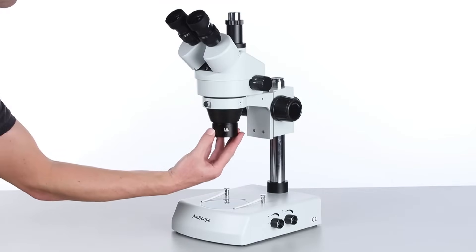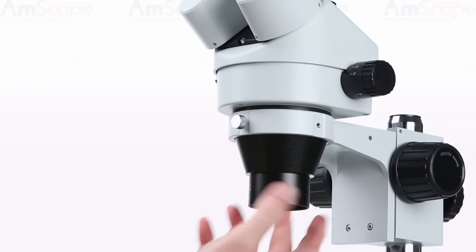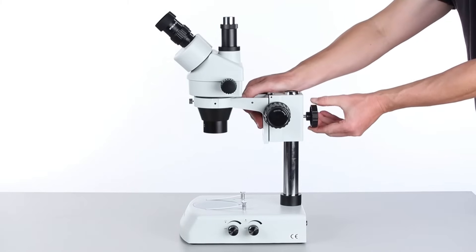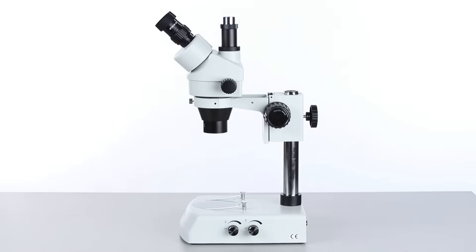The 0.5 Barlow lens will decrease the magnification by one half. The decreased magnification will require a larger working distance, so the focusing rack must be raised.